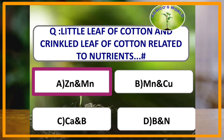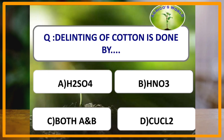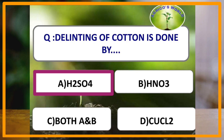Delinting of cotton is done by which of the following chemicals? Delinting of cotton is done by H₂SO₄ (sulfuric acid) in the ratio of 1:10 — one portion of sulfuric acid is diluted in 10 portions of water and then used for delinting. Delinting of cotton helps in grading and destroys the seed-hibernating pathogens.